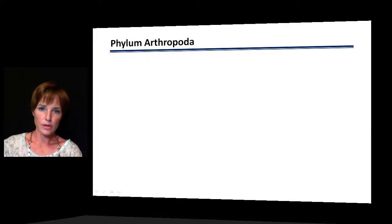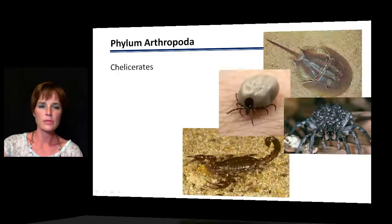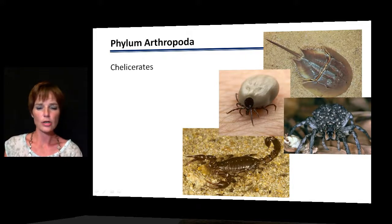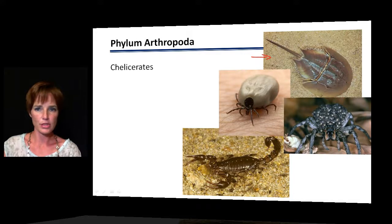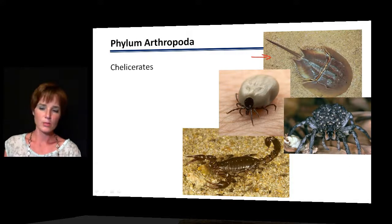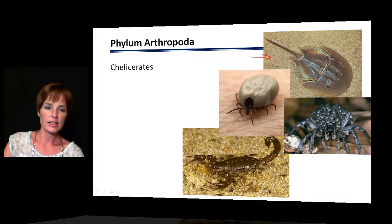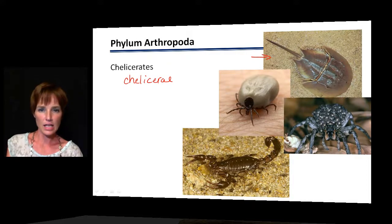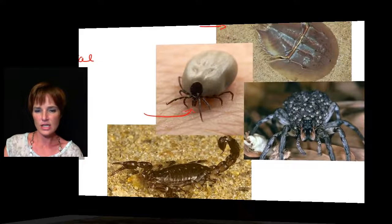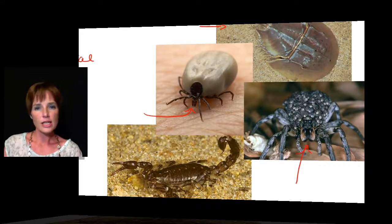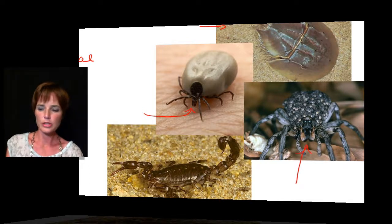The chelicerates are one major arthropod group, including horseshoe crabs, ticks, and arachnids such as spiders and scorpions. They are known for having chelicerae — claw-like, fang-like appendages used for feeding. You can see these on ticks and spiders, and they are the defining feature that holds this clade together.